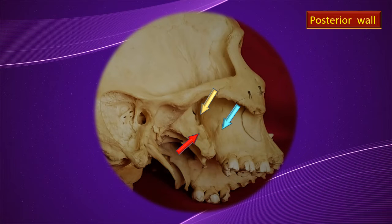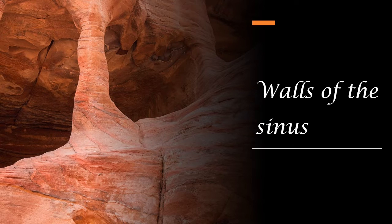A few words about the posterior orientation: the blue arrow indicates the posterior or infratemporal wall of the maxillary sinus, the red arrow is the pterygoid process — part of the sphenoid bone — and the yellow arrow indicates the gap between the maxilla and the pterygoid process, which is a fissure called the pterygomaxillary fissure. You may have seen this in the infratemporal fossa where the maxillary artery enters the pterygopalatine fossa.